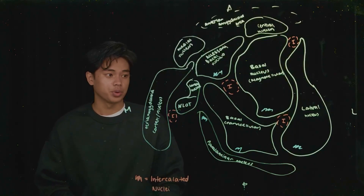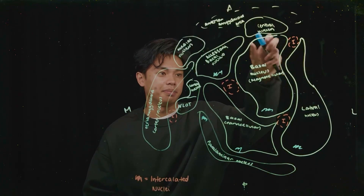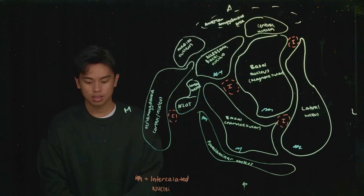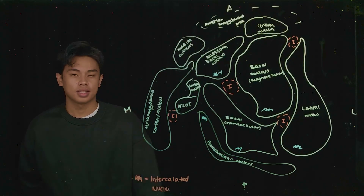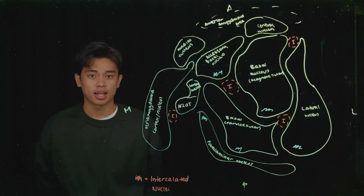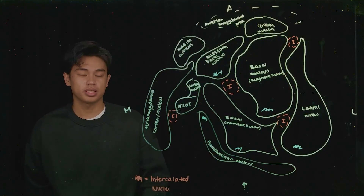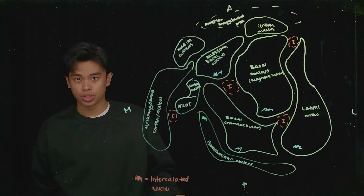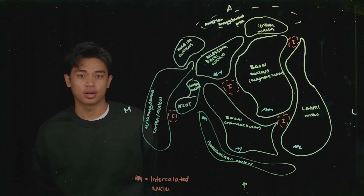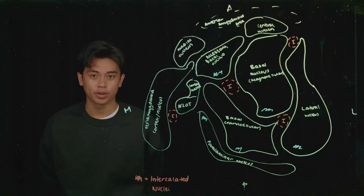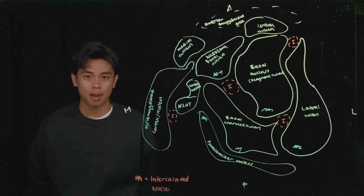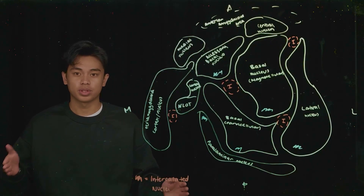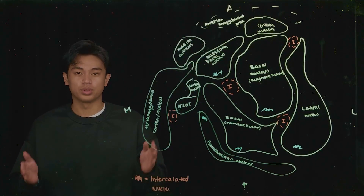The basolateral group consists of the lateral nucleus, the basal nucleus, the accessory basal nucleus, and the paralaminar nucleus. This group is primarily responsible for sensory input integration — it receives sensory input from all around our bodies except our sense of smell, and it integrates or associates it with an emotional significance. For example, if you listen to a cheerful song on the radio, that auditory stimulus makes you happy — that is what the basolateral group is responsible for doing.